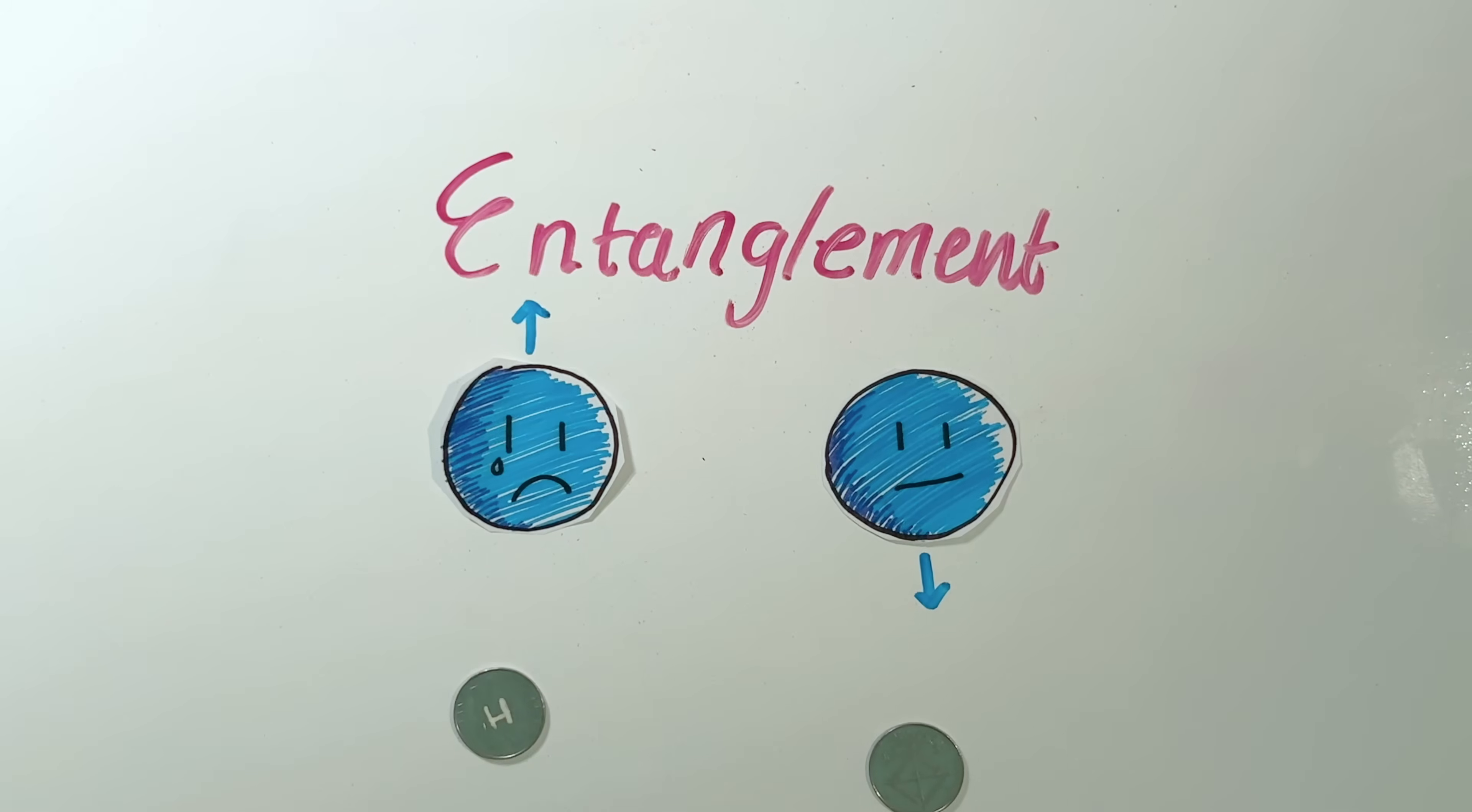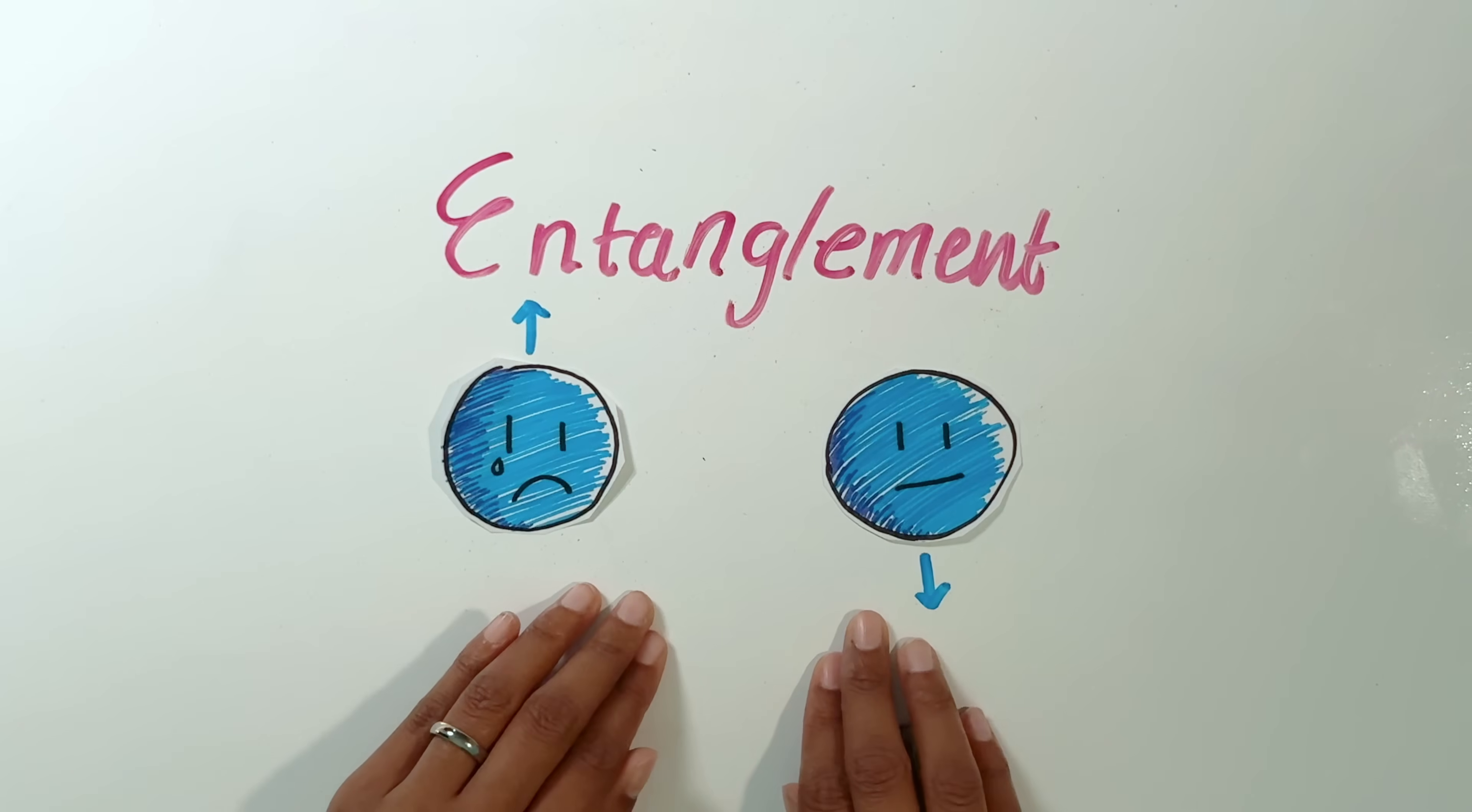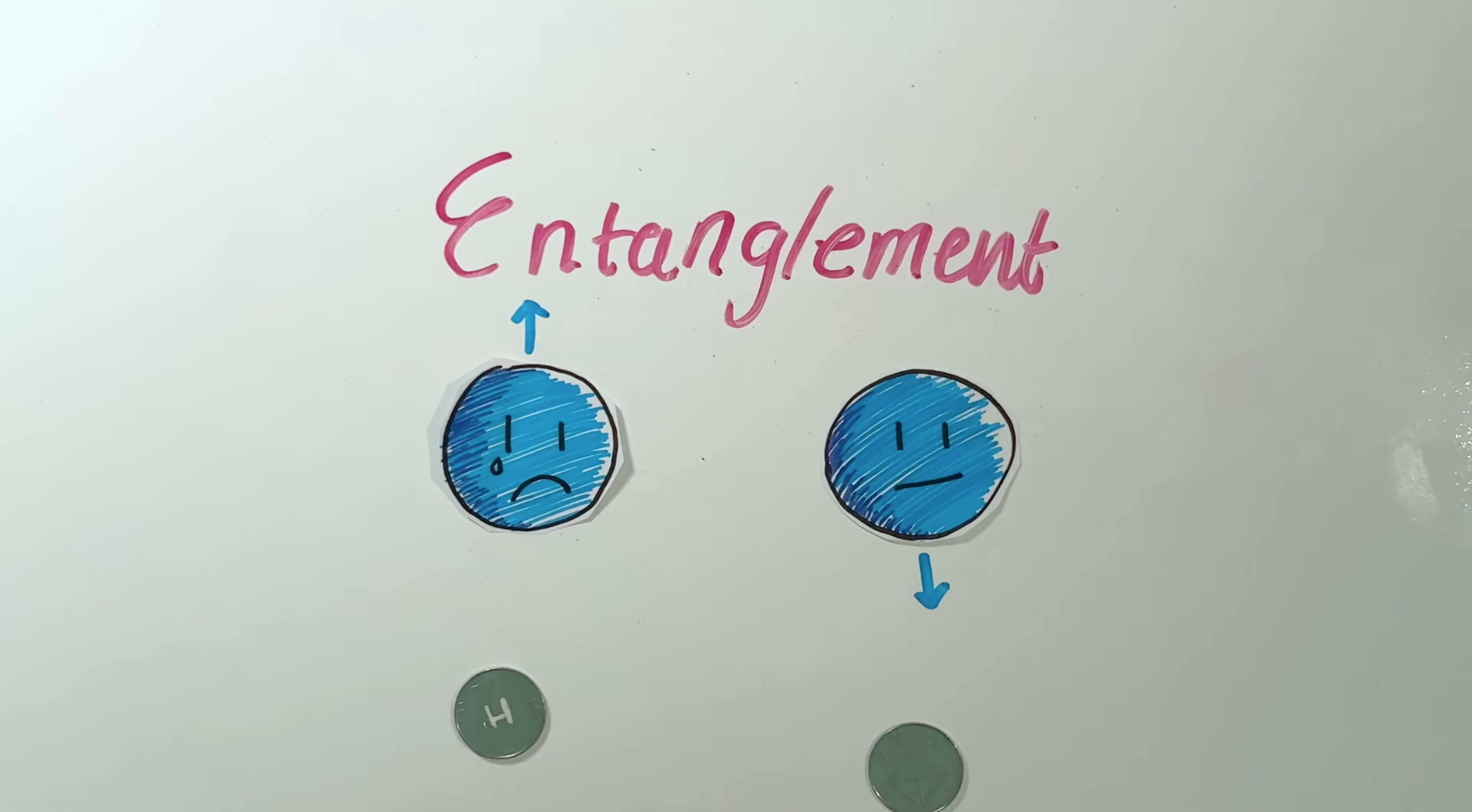There actually is a real state for both this object and this object. And it actually would be possible to say that this coin is in state heads. It just happened that we didn't know something. And then that is why we had to talk about the state in terms of the other coin. But this is just classical uncertainty. And classical uncertainty, even when it's spread across two different objects like this, doesn't count as entanglement.